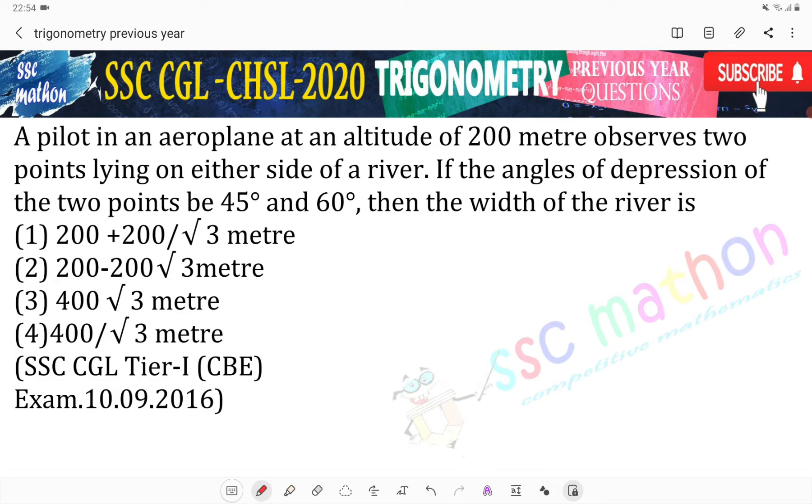A pilot in an aeroplane at an altitude of 200 meter observes two points lying on either side of a river. If the angles of depression of the two points be 45 degree and 60 degree, then the width of the river.